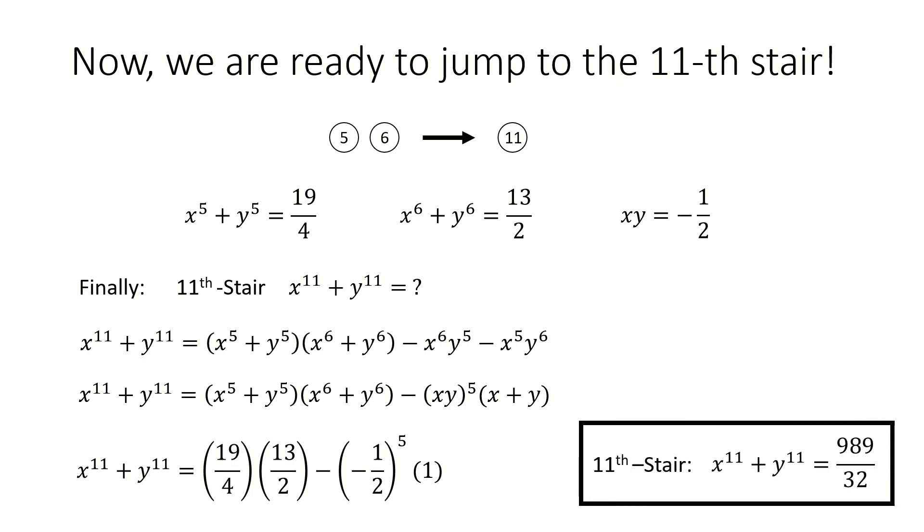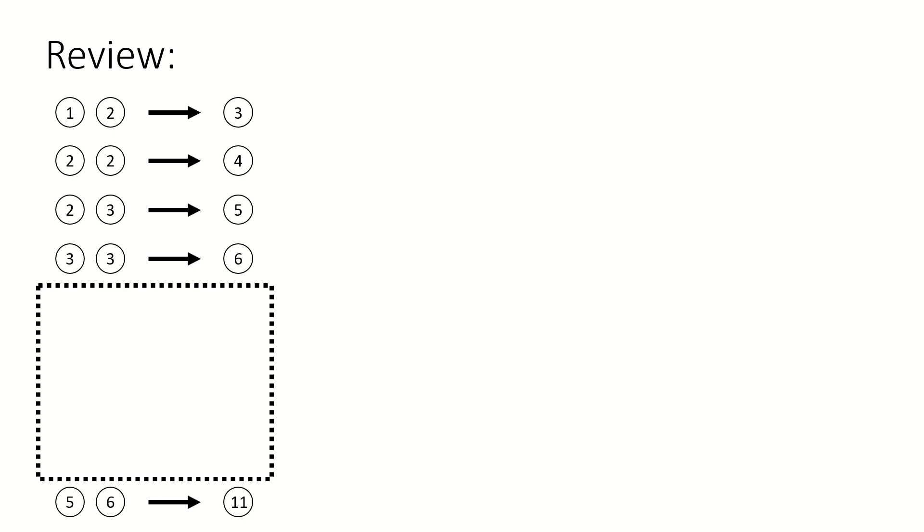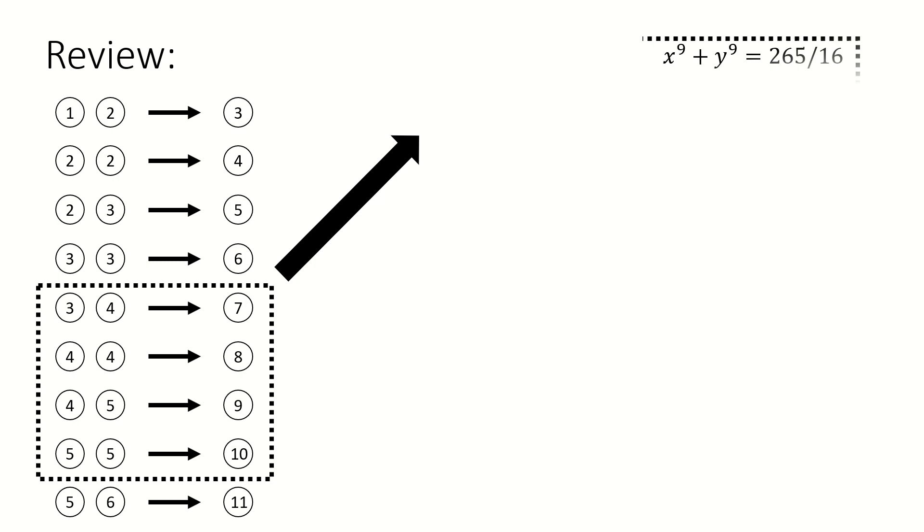But wait, what about other missing stairs? Here is a review. From previous slides, we already show how to calculate those ovals from 3 to oval 6 and oval 11, but we skip stair 7 to stair 10. But I know you know how to fill this box. I list these results for those missing stairs so that you can practice if you have time.